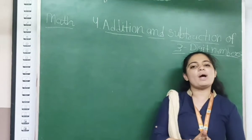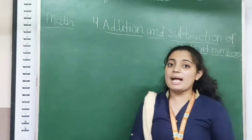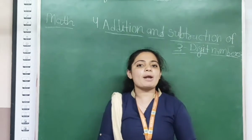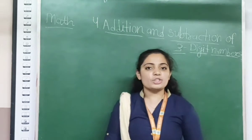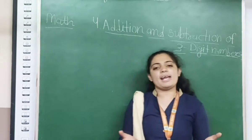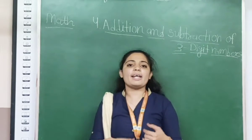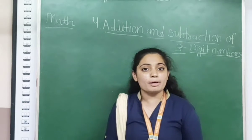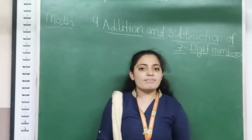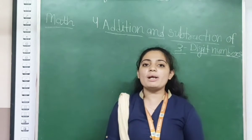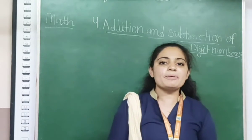Previously in chapter number 1 and 2, we learned about 2 digit numbers — how to form 2 digit numbers and addition and subtraction of 2 digit numbers. In chapter number 3, we got information about 3 digit numbers: how to form them, how to write them, place value, comparison, after number, before number, and how to put them on an abacus.